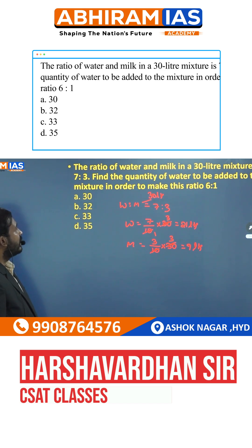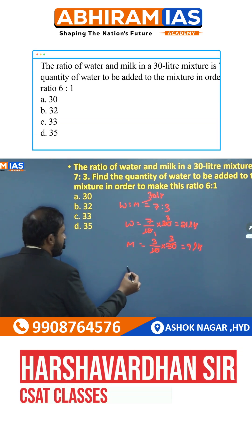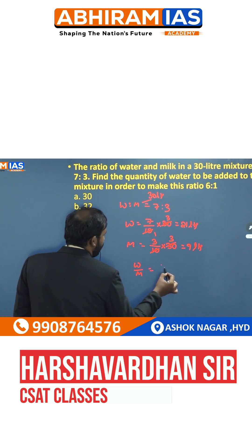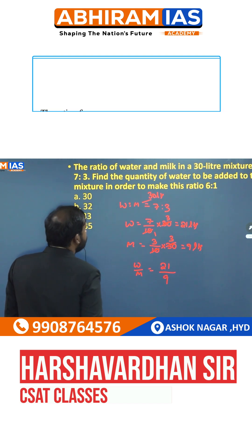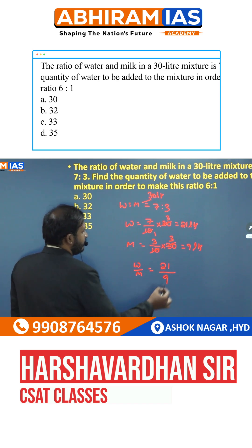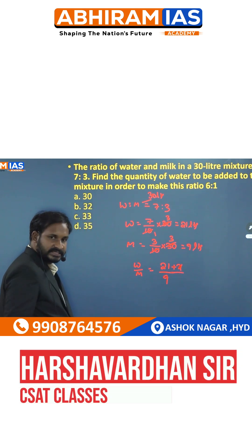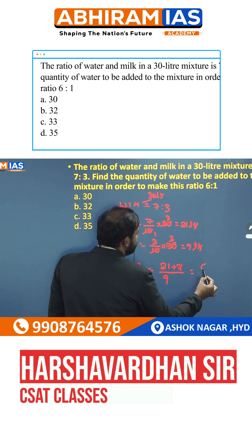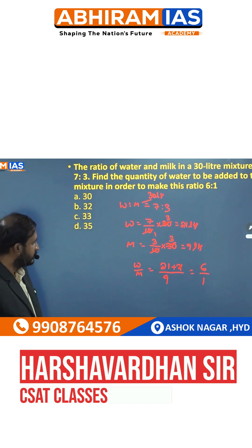Now, find the quantity of water to be added so that the mixture makes the ratio of 6 is to 1. Water and milk originally are in water portion 21 and 9. To this, we are adding some water. We do not know how much water we are adding, so let us assume it as x. Then the ratio is becoming 6 by 1.